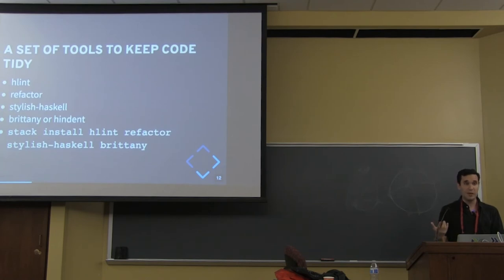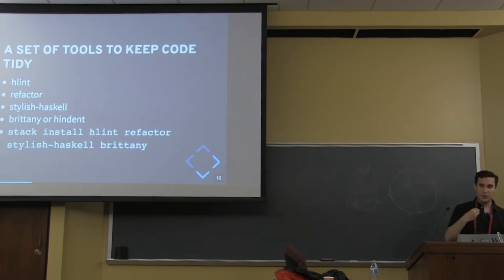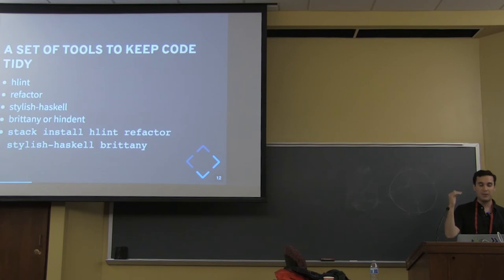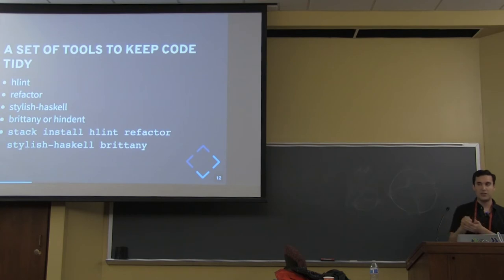It's very important to have a way to unify those tasks into something — it doesn't have to be make, but it has to be something outside the scripting language of the CI you're using. You don't want shell scripts in your Jenkins file or Travis YAML. Some tools I personally use in my pipeline: HLint, Refactor, Stylish Haskell, Brittany or HIndent. I use Brittany because it's more stable.